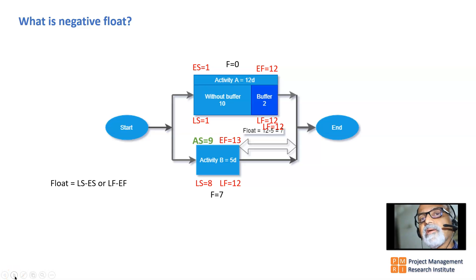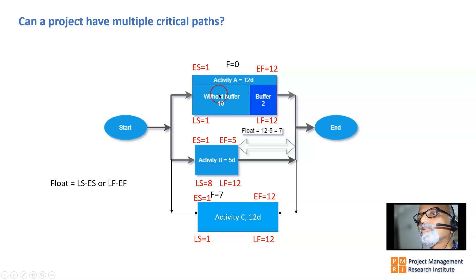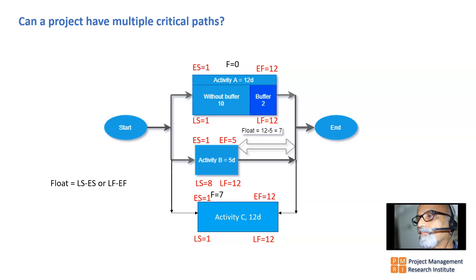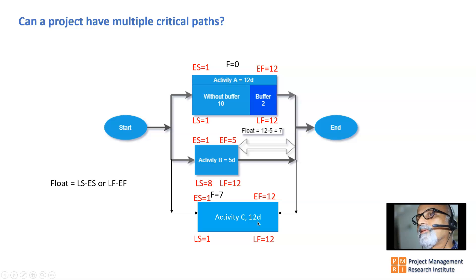Can a project have multiple critical paths? If I add Activity C with a 12-day duration alongside Activity A (12 days) and Activity B (5 days), working out the float shows Activity A and Activity C both have zero float. So Start→A→End is a critical path and Start→C→End is also a critical path — both have zero float, meaning a project can have multiple critical paths.